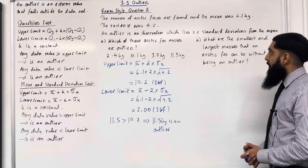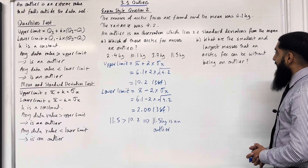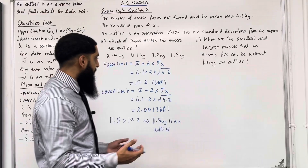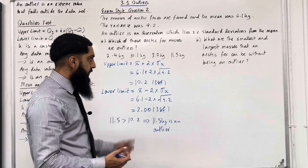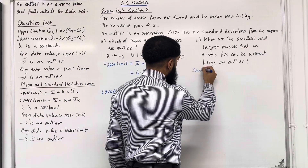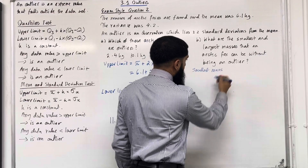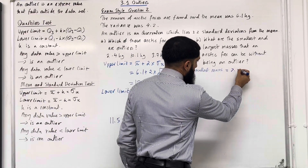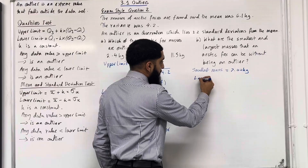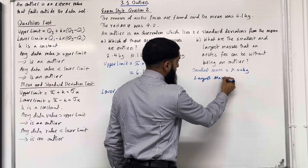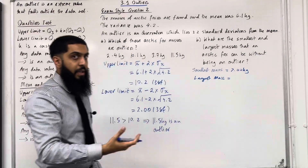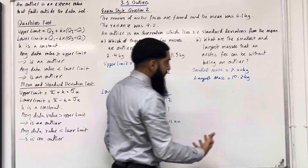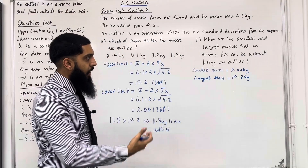Let's have a look at part B. What are the smallest and largest masses that an arctic fox can be without being an outlier? The smallest mass without being an outlier is the lower limit, which is 2.00 kg. The largest mass without being an outlier is the upper limit, which is 10.2 kg. This completes part B of exam style question 2.